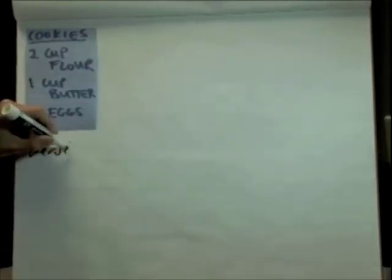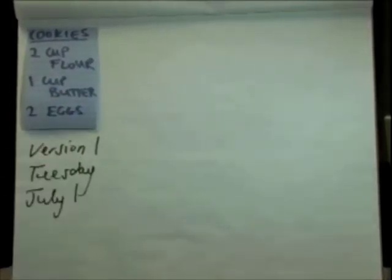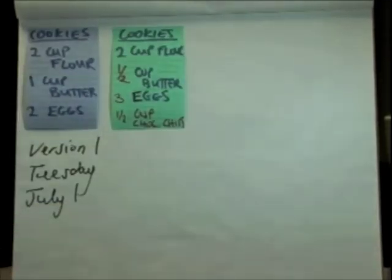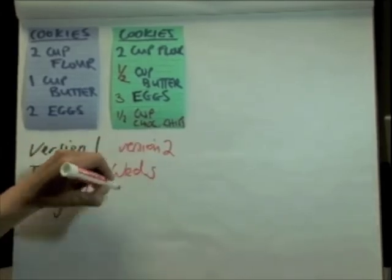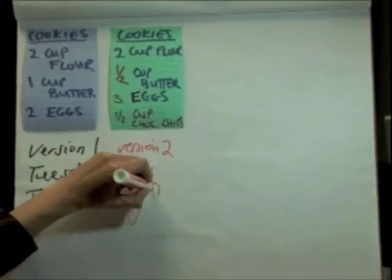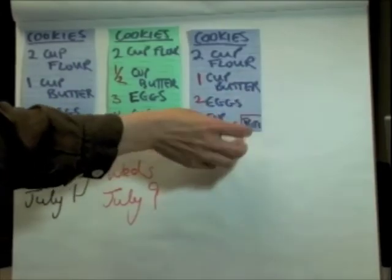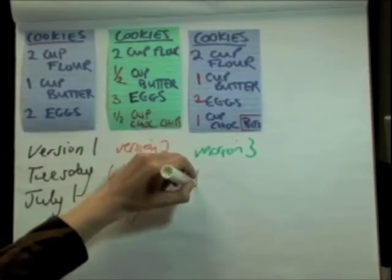Let's imagine we have a cookie recipe. The first version of this, which we created on Tuesday, July 1st, is pretty simple. Then, on Wednesday, July 9th, we change our cookie recipe. We change the amounts of flour, butter and eggs, and we add some chocolate chips.